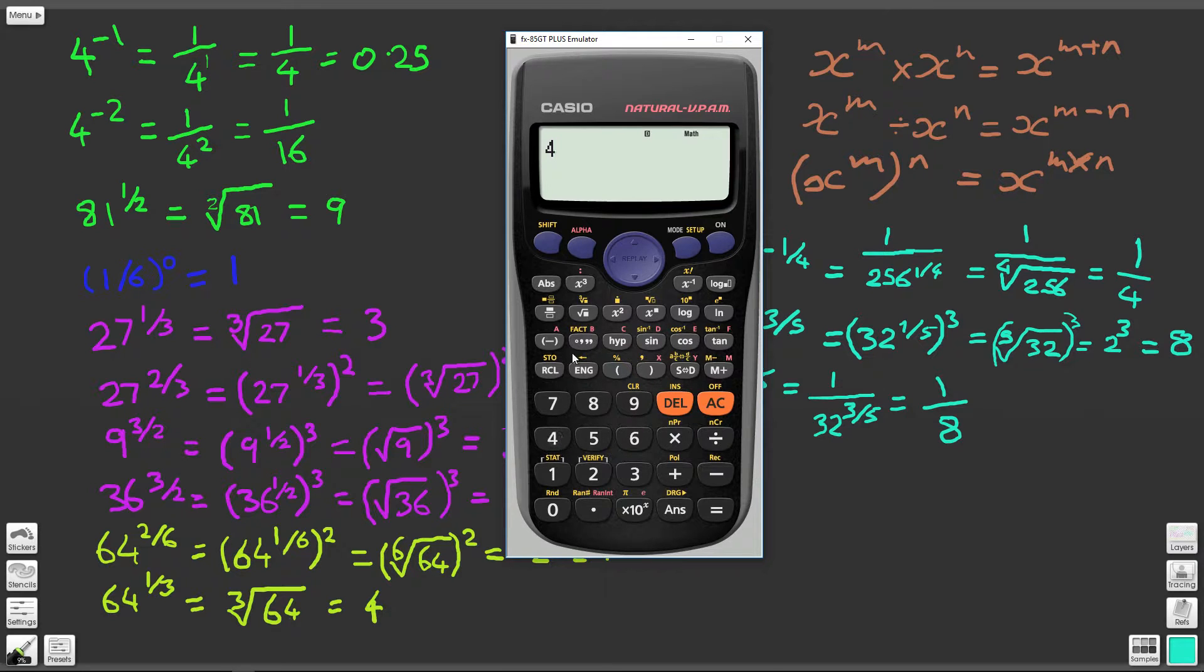So let's have a look at putting these in. First of all we've got 4 to the power of minus 1. Let's see what that comes out with. It comes out with a quarter, and of course if you push the SD button there you can see it will change it from a fraction to a decimal.